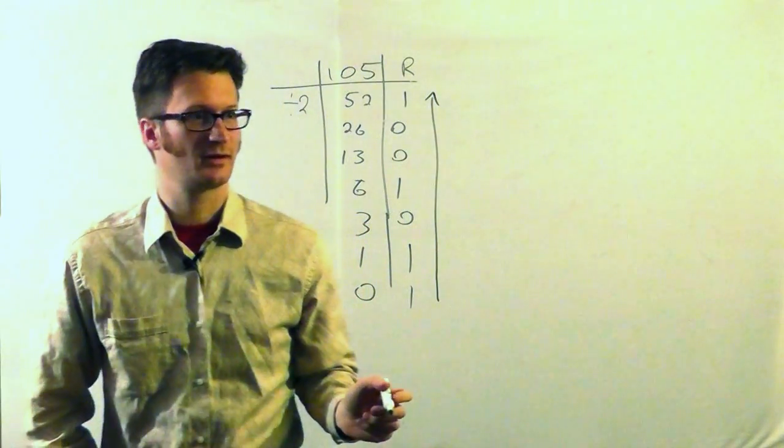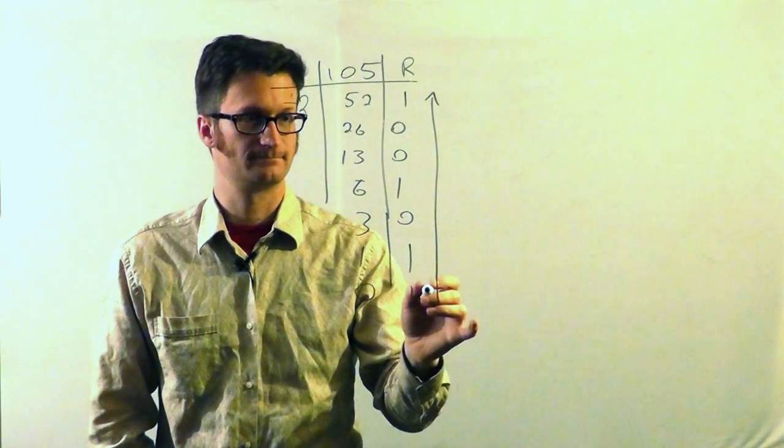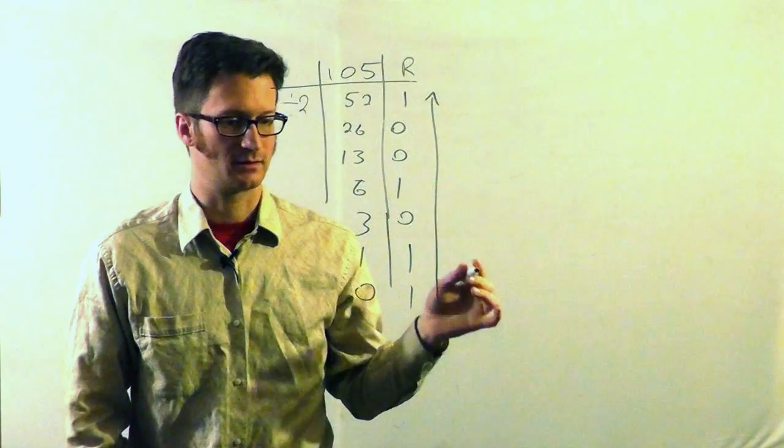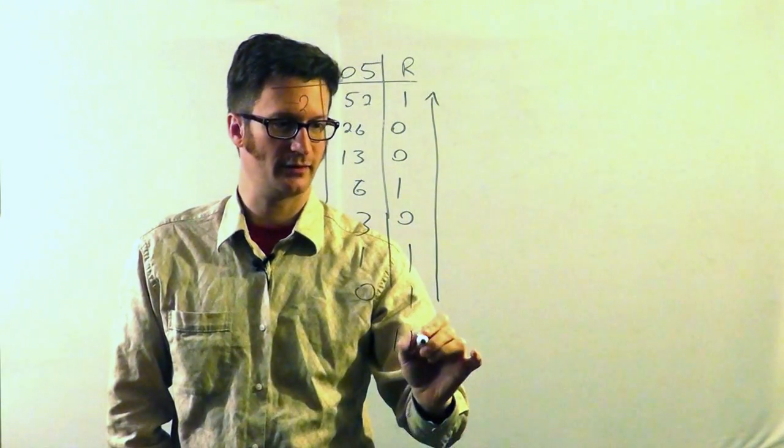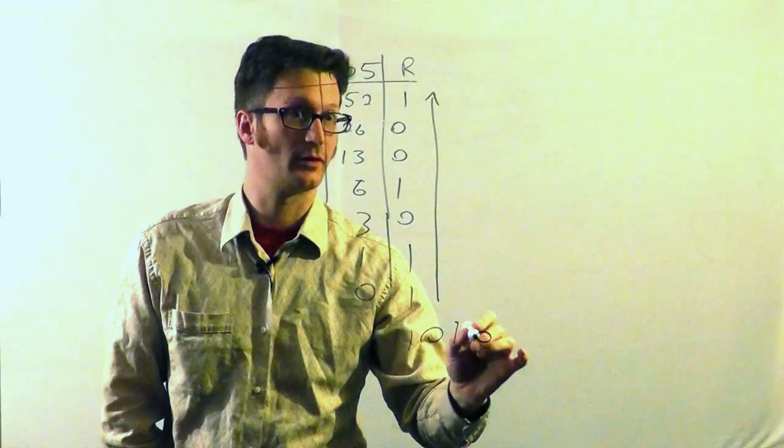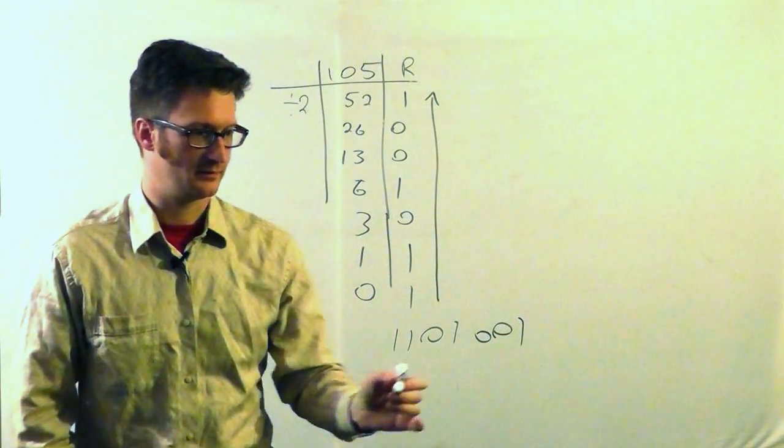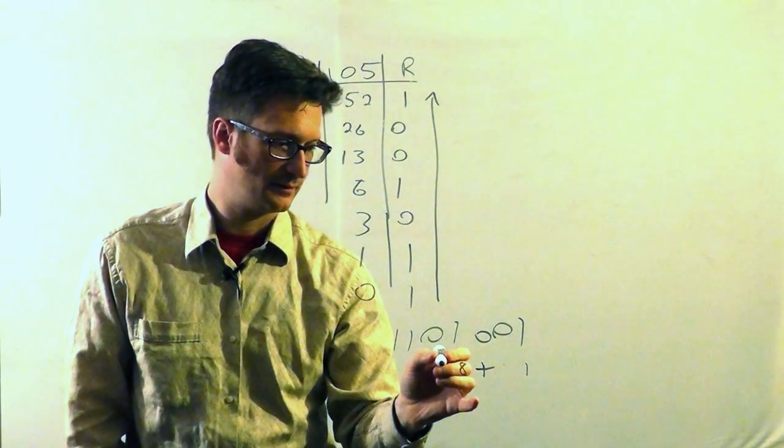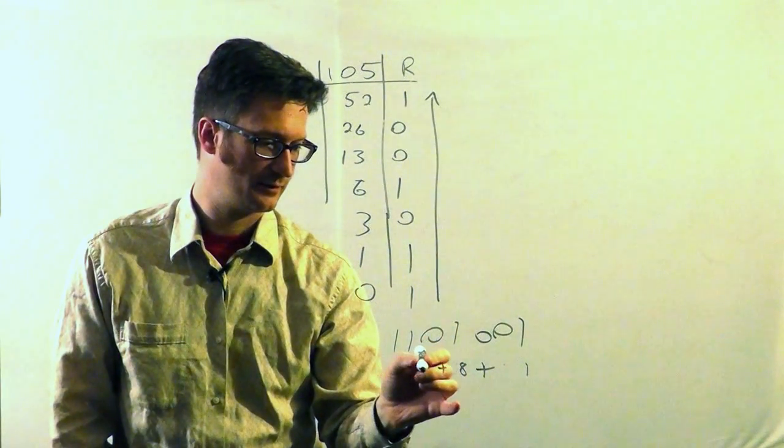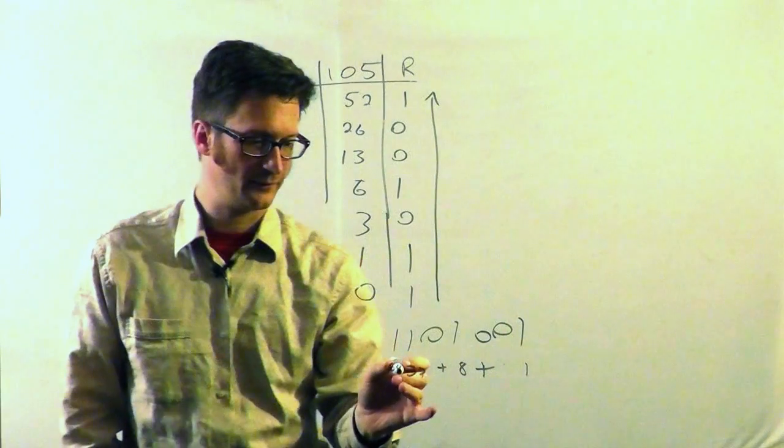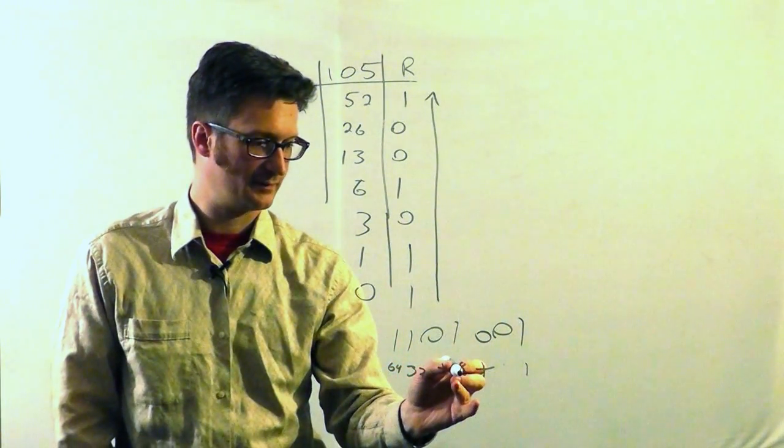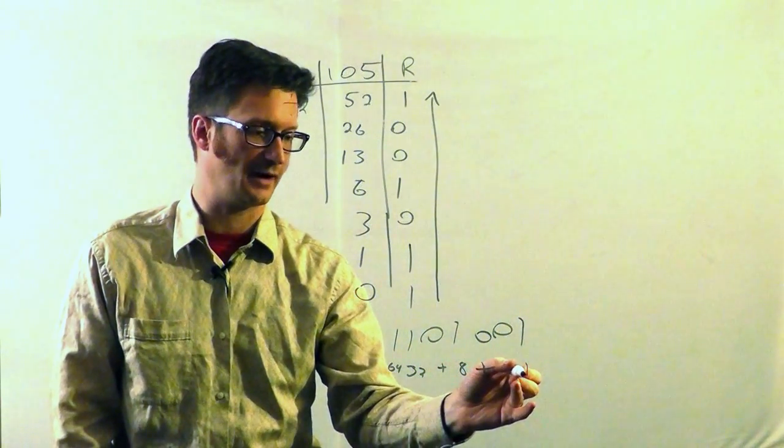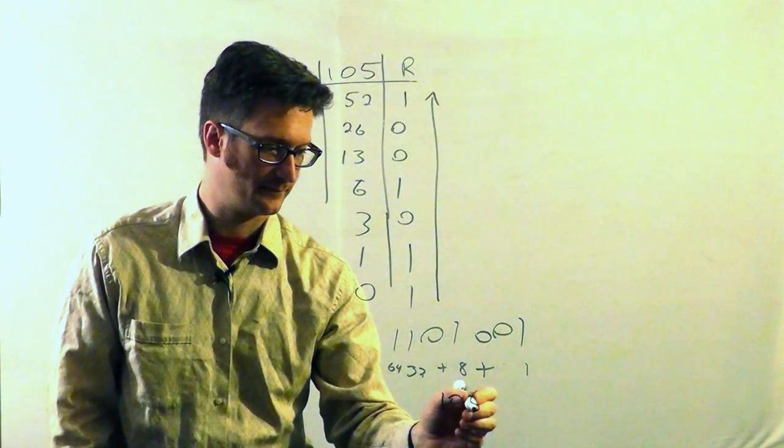And you can always check your results by just multiplying them by each step. So this is equal to 1101001. So that's 1 times 2 times 4 times 8, 16, 32, and 64. 64 plus 32 is 96, plus 8 is 104 and 105, right there.